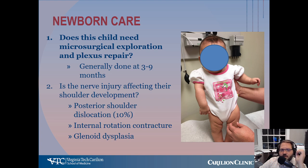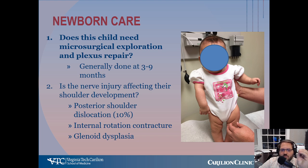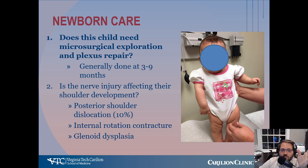Taking care of these kids — the newborn care — when you're seeing a baby with an obstetrical brachial plexus palsy, your first question should be: does this child need microsurgical exploration and plexus repair? That is the goal of treatment in the first year: to determine if they need it and then to do it when they need it. The goal should be to do this between three to nine months. The exact timing is variable.